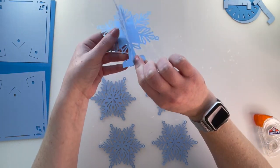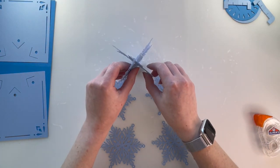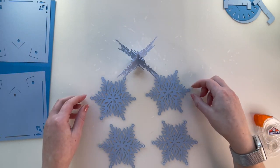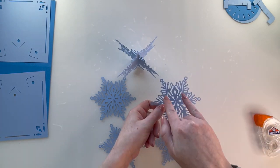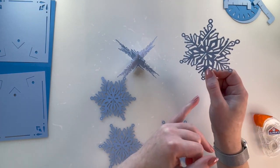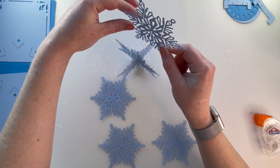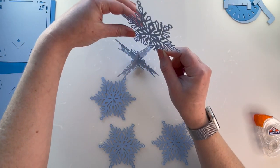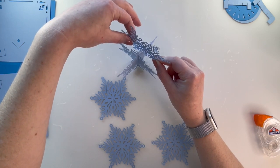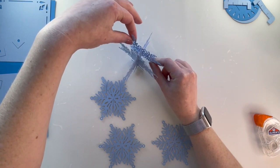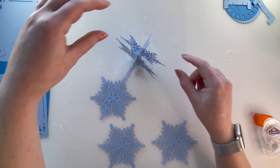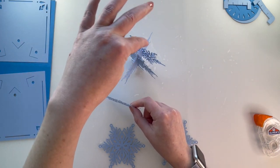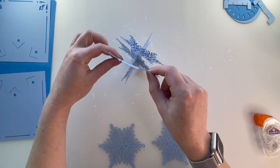Once you have that glued on, you don't have to worry as much about these pieces sliding off from each other. You can sit your snowflake back up like a tree. You're going to take your next two pieces, which are two slits on the top, one slit on the bottom. Take the bottom slit and choose any side that you want and slide it on.